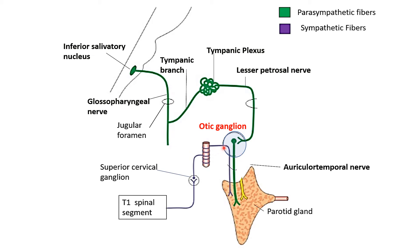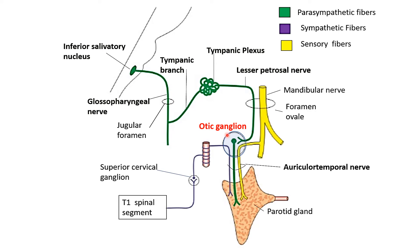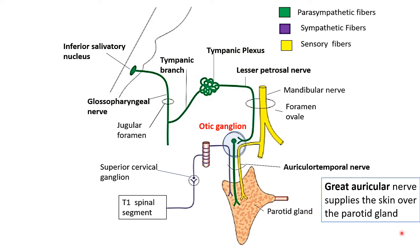The sympathetic postganglionic fibers pass through the otic ganglion without synapsing and then supply the parotid gland via the auriculotemporal nerve. The sensory fibers reach the parotid gland through a branch of the mandibular nerve, which passes through the foramen ovale and divides into anterior and posterior divisions. The auriculotemporal nerve, a branch of the posterior division, provides sensory innervation, and all three fiber types travel along it.